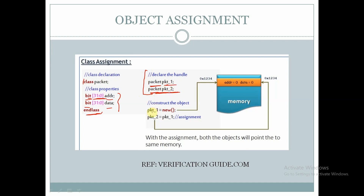Here we are creating an object for pkt1 by using the keyword new, and here we are copying the object from pkt1 to pkt2. This method is object assignment. With the assignment, both handles will point to the same memory. The memory is created only for the handle pkt1 using the keyword new.